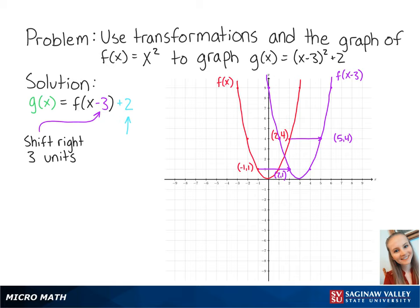Adding 2 to the function means that we will shift our new graph up by 2 units. So our new points are now at (5, 6) and (2, 3). Connecting these points, we get the graph of g(x), and this is the final answer.